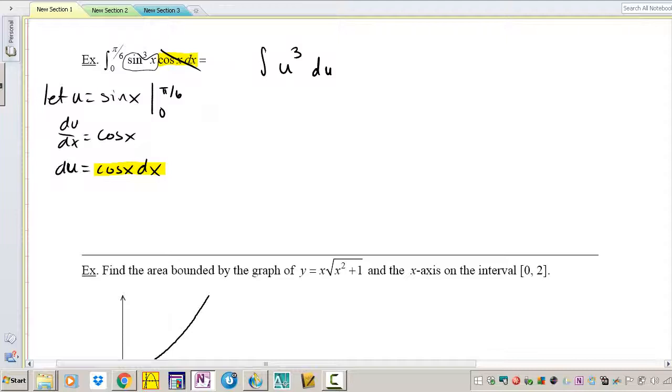Now this becomes a very simple u-sub problem. Let me go and apply my limits of integration into my u so that I get my new limits of integration with respect to u. So u of pi over 6, what is the sine of pi over 6? That is 1 half. u of 0, sine of 0 we know is just 0.